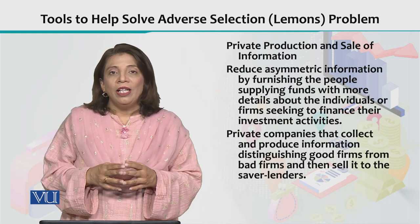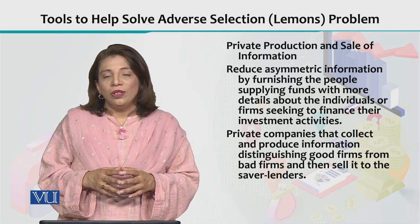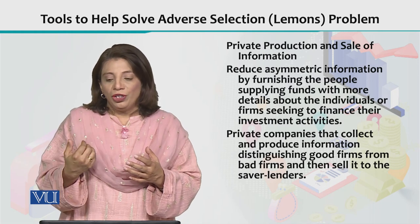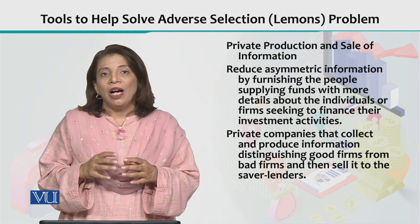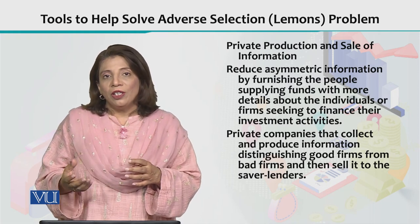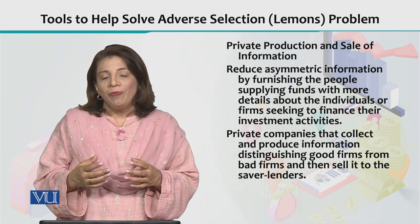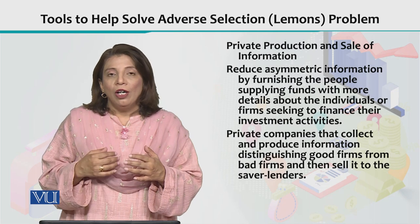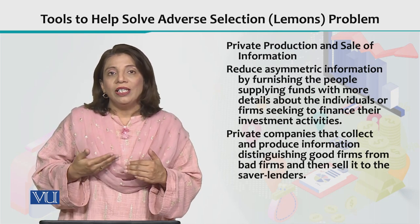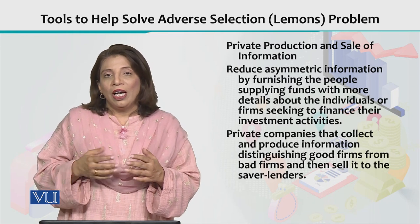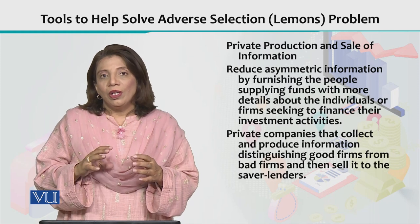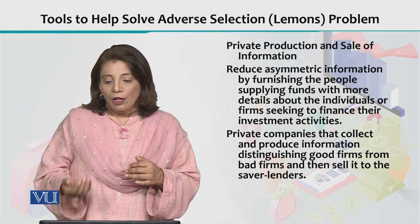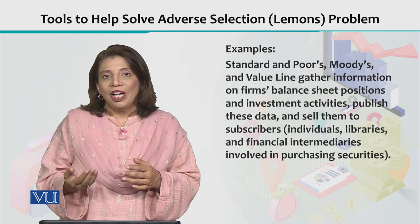There are several institutions and organizations that provide information — they produce private information and then sell it. They keep an eye on the overall financial indicators that explain how firms are behaving and how they will be performing in the future. This helps reduce information asymmetries among investors. These companies collect data about different types of firms and make it available to subscribers.